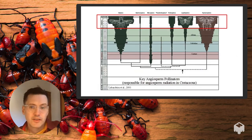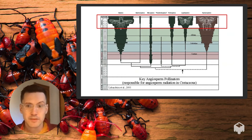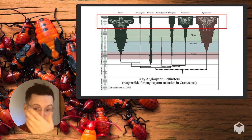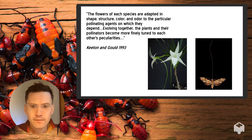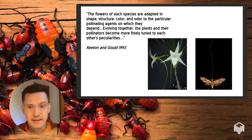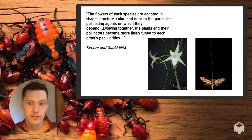The mutualistic association between insect pollinators and angiosperms was central to the radiation of both insects and flowering plants from the Cretaceous onward. These particular and sometimes peculiar relationships led to the idea that pollinators could pretty much totally explain the diversification of angiosperms.